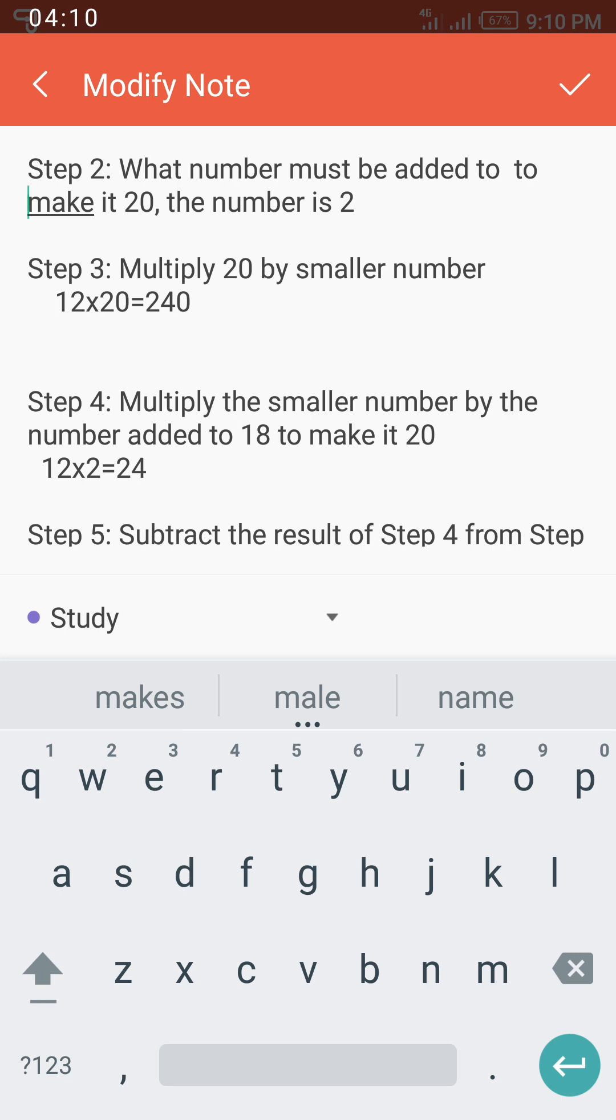Let's move to Step 4. Step 4 says that we should multiply the smaller number by the number we added to 18 to make it 20, and what is that number? It's 2. So 2 multiplied by 12, that gives 24.